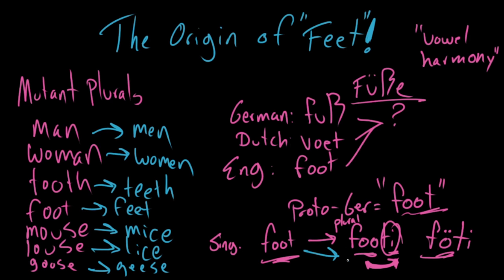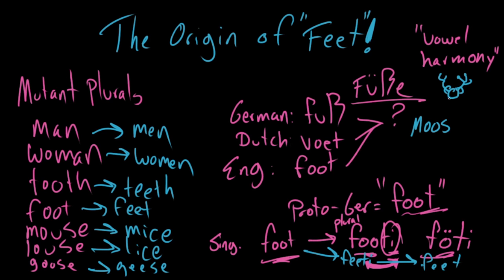So it goes from foot to feety to feet. The same exact thing happened with the word mouse, which probably used to be moose — because in Frisian, which is the closest cousin to English, the word for mouse still is moose. You find similar things in Germanic languages like maus in Dutch and maus in German. The plural became mysy and then eventually meesy, and then you get mees. Then a few hundred years later, during the Great Vowel Shift, that mees becomes mice. A lot of E vowels in the Great Vowel Shift about 500 years ago became I vowels.